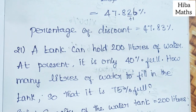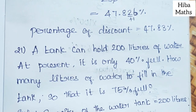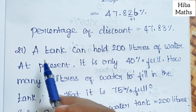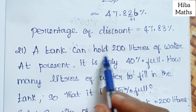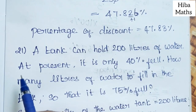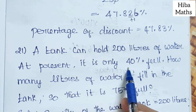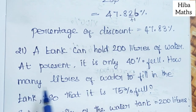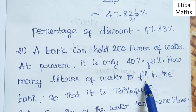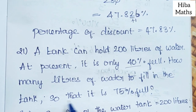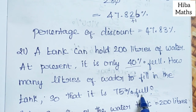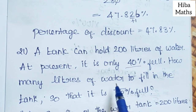Hello students, welcome to Hibamax 7th standard, Term 3, Chapter 2, Exercise 2.5. Question 21: A tank can hold 200 liters of water. At present it is only 40% full. How many liters of water need to fill in the tank so that it is 75% full?